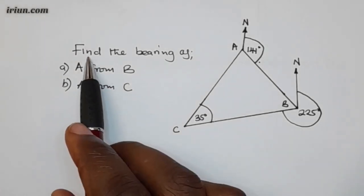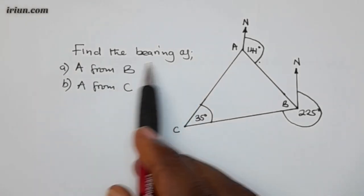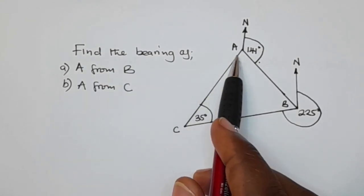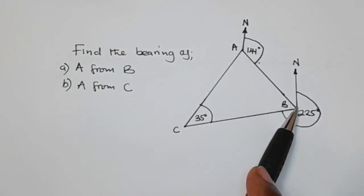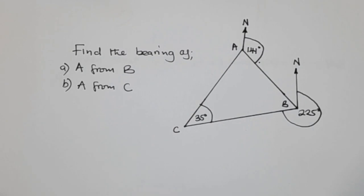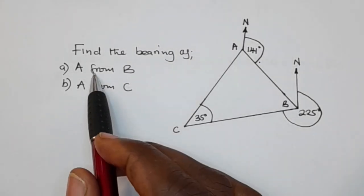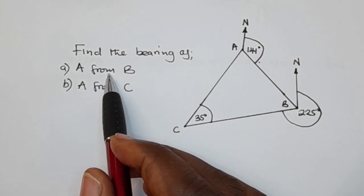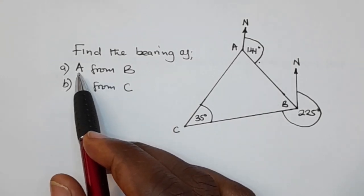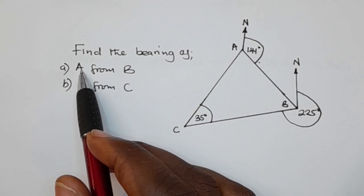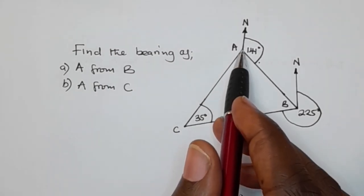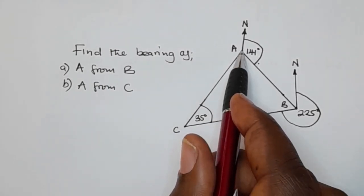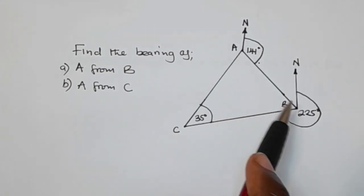So here is a question: find the bearing of A from B. They want you to find the bearing of A whilst standing at B. From the previous video, we learned that the word 'from' in bearing is very important. So when they say calculate the bearing of A from B, it means they want you to calculate the bearing of A whilst you are standing at B.